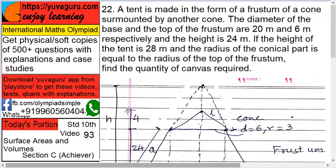The total height of the tent is 28 meters. This frustum is 24, so the remaining height of the cone will be 4 meters. The radius of the conical part is equal to the radius of the top of the frustum, meaning the cone is exactly fitted on top.